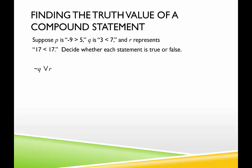First, we have not Q or R. So we need to decide whether the statement is true or false. I'm going to go up here and just look at my options. So Q says that 3 is less than 7. That is a true statement. R represents 17 is less than 17. That is a false statement.